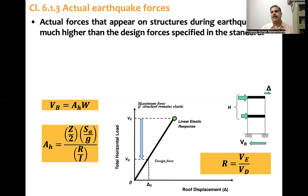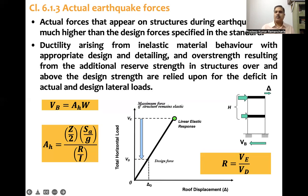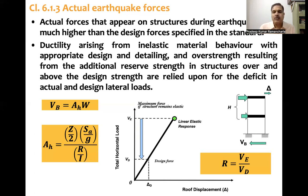R cannot be selected randomly. The code prescribes R values depending on the structural lateral load resisting system. Additionally, the code stipulates that ductility from inelastic material behavior with appropriate design and detailing, over-strength from additional reserve strength in structures, and redundancy in the structural system are all relied upon to account for the deficit between actual and design lateral loads.